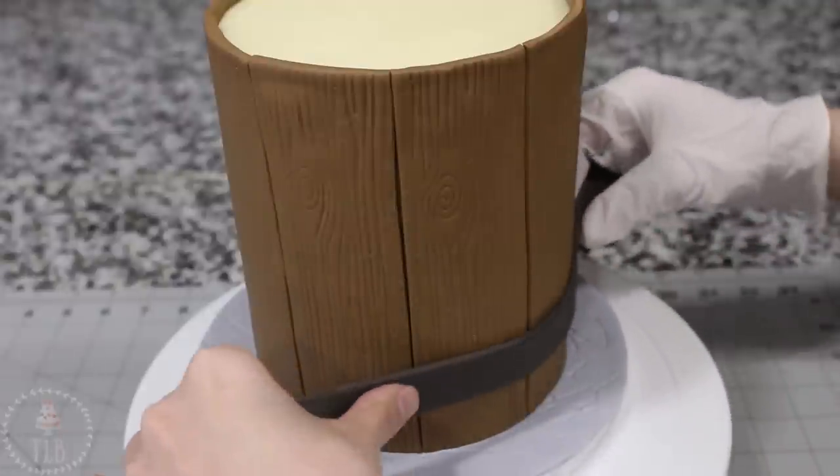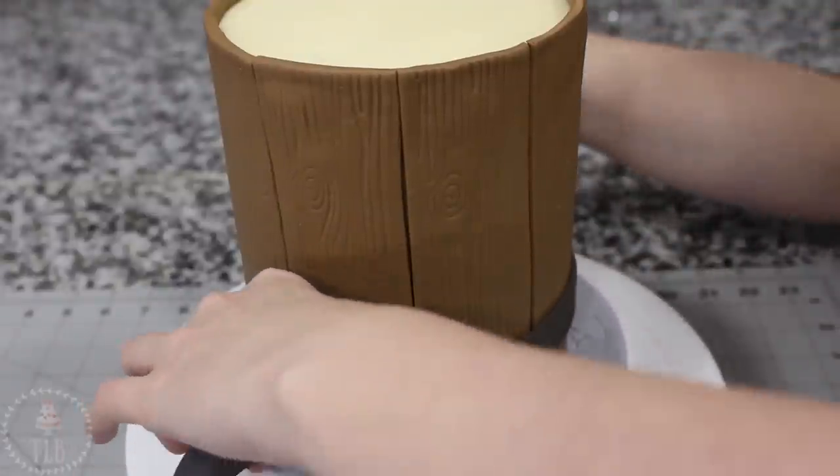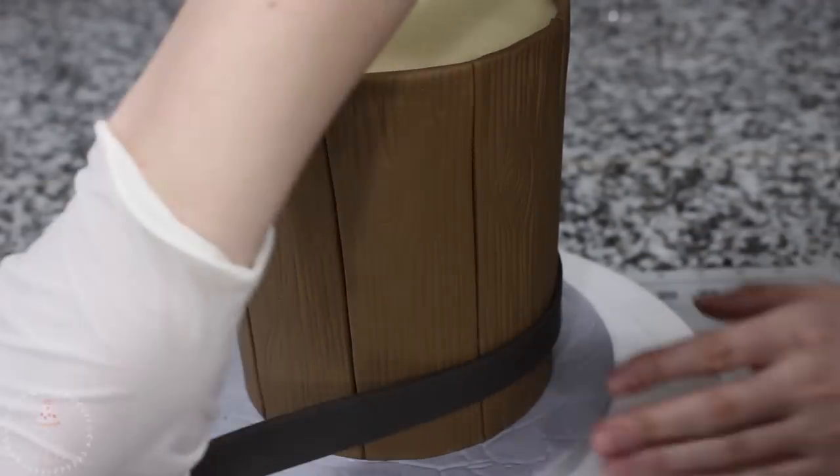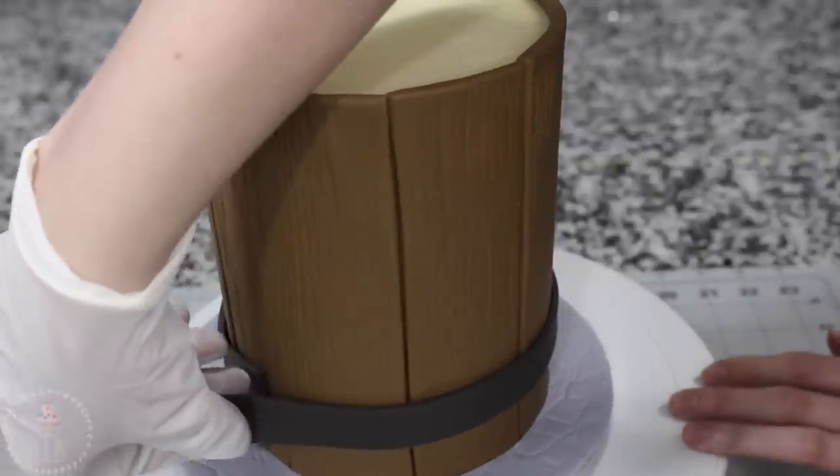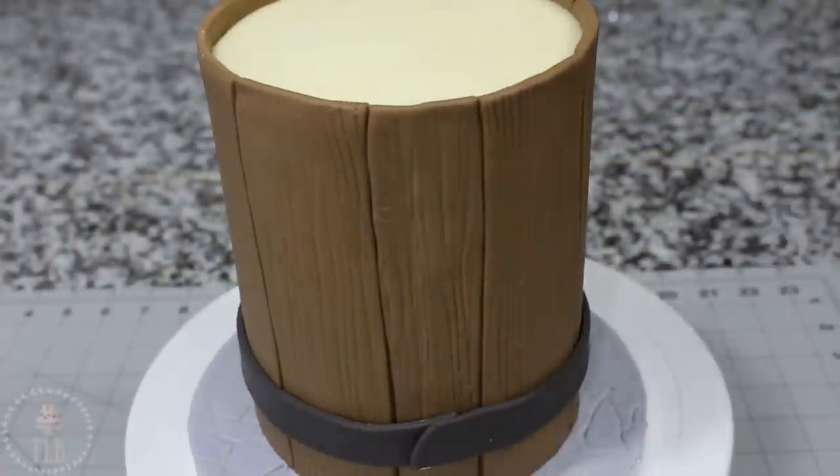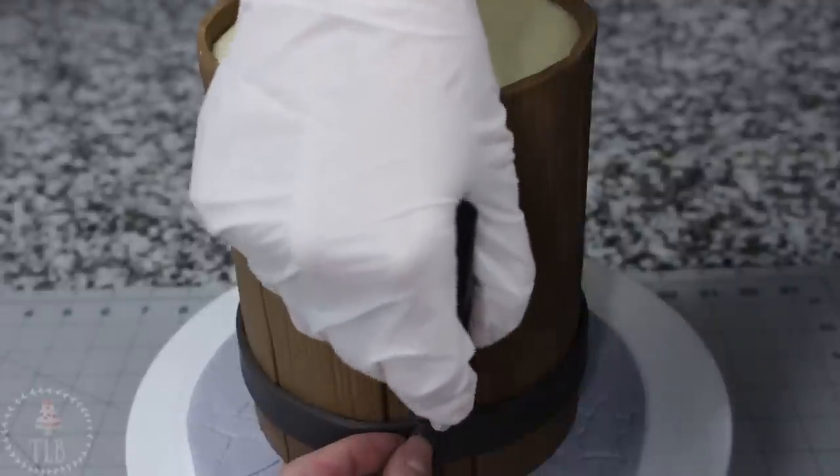I cut out two long strips of almost black, really deep deep brown fondant, and I'm wrapping that around the bottom and the top of my cake. I just brushed the back with a little bit of shortening because I knew that wasn't going on straight the first go, so I just wanted to be able to move it around a little bit.